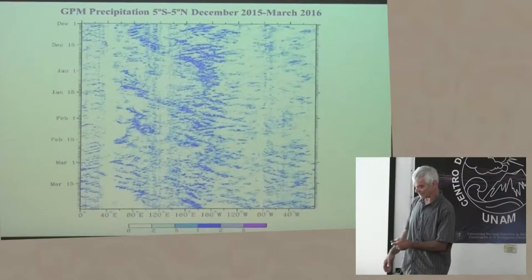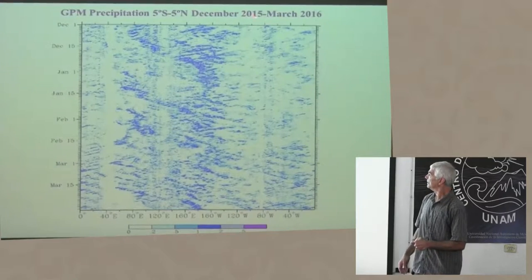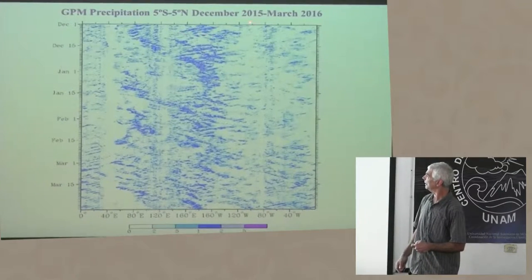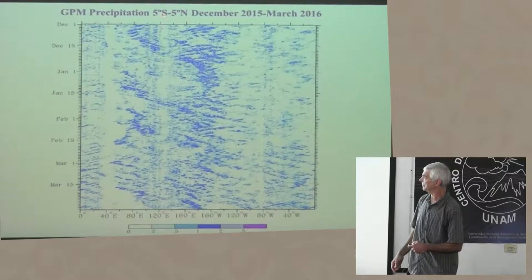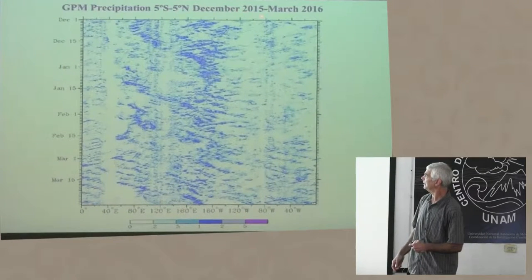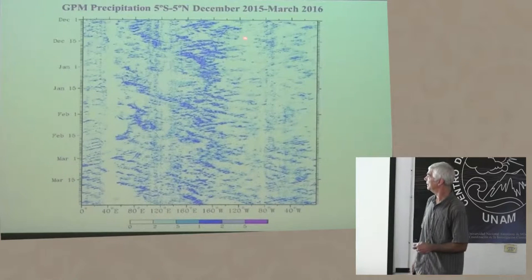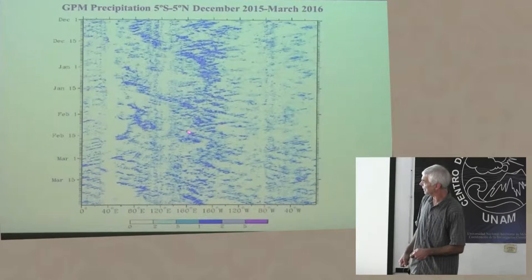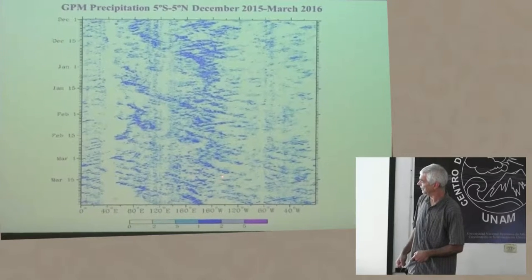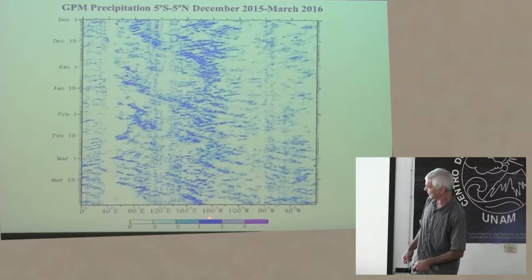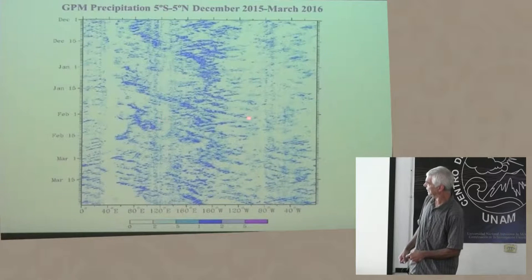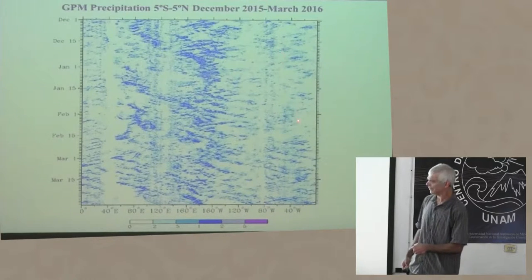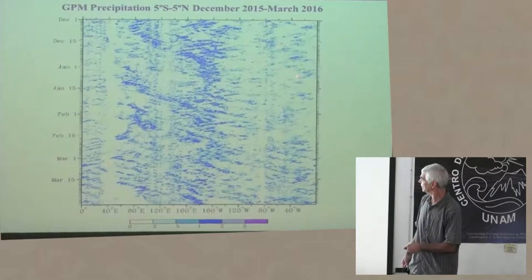Here's the last northern winter, the same kind of diagram with the same 5°S to 5°N averaging from December through March of this past year. We had a big El Niño event going on. During this event, these Kelvin waves were very important in terms of convective organization over the Pacific. The Pacific runs from here to here, and there is not much Kelvin wave activity over the Amazon in this example.